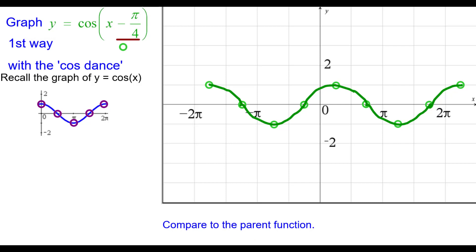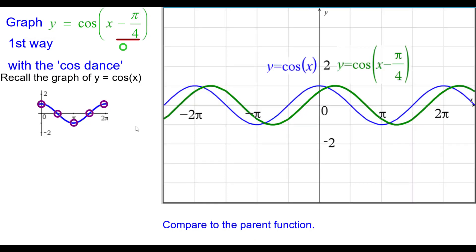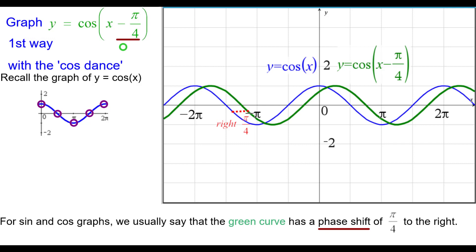Comparing it to the parent function, we say it's kind of out of phase here. That's where we get that term phase shift. The blue curve is shifted to the right pi over 4 to obtain the green curve. Not just these points, but all points are shifted to the right, pi over 4 units. We usually say that the green curve has a phase shift of pi over 4 to the right.